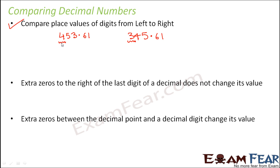Now we start comparing the digits from left to right. The leftmost digit for the first number is 4, and for the second number it is 3, and this is the hundreds place. So the place value of digit 4 is 400, and the place value of digit 3 is 300. Since 400 is greater than 300, 453.61 is greater than 345.61. So basically we start comparing the digits from the left-hand side.